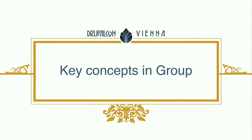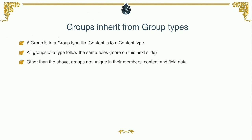Let me quickly explain a few key concepts in group. Groups inherit from group types — basically, like when you have nodes that inherit from node types (articles and pages), every article has the same fields specified for that node type. Same here: groups inherit from group types, like nodes inherit from node types. All groups follow the same set of rules defined by their group type. And just like articles can be unique in the content they have, groups can be unique too — they can have their own content, their own members (two groups don't need the same members), and their own field data.